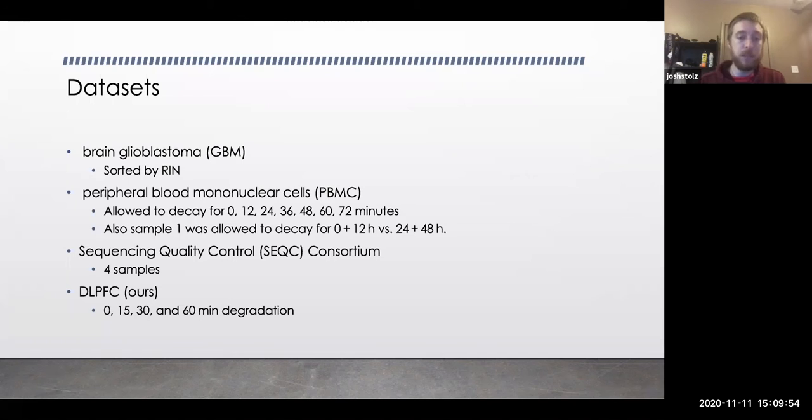They have blood cells, and they allowed these to degrade from zero to 72 minutes and allowed one sample to degrade over the course of two days. So effectively what you're doing when these tissues are degrading is you're creating a degradation matrix. You have RNA-seq at each degradation time. And then eventually you're going to put that matrix through your pipeline.